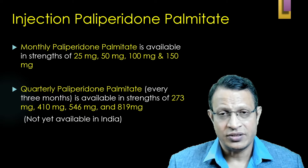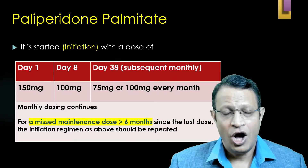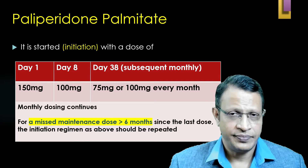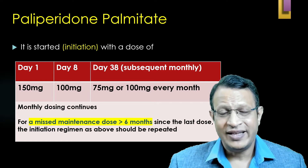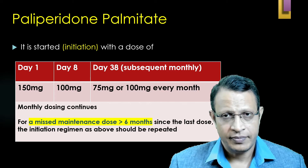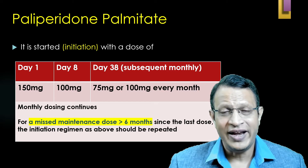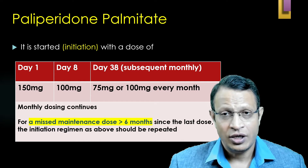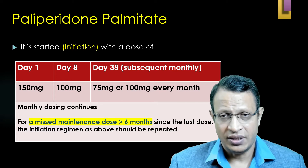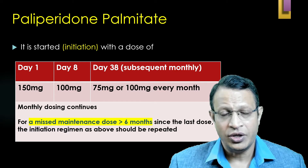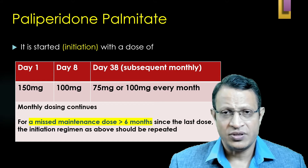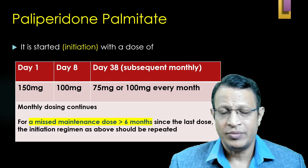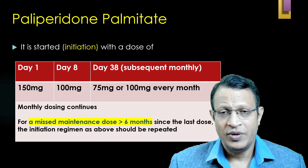Let's discuss how paliperidone palmitate is initiated. On day 1, you will give a loading dose of 150 mg of paliperidone IM. On the 8th day, you will give 100 mg only. From the 8th day, you will wait for 1 month — that is on the 38th day — you will give either 100 mg or 75 mg. The choice between 75 and 100 mg is based upon clinical response. If the patient has responded well, choose 75 mg. If the patient has partially responded or not responded, choose 100 mg.